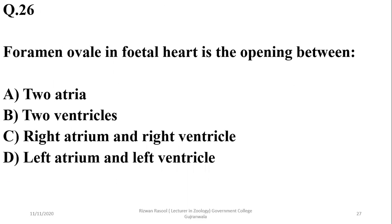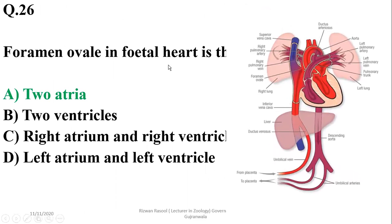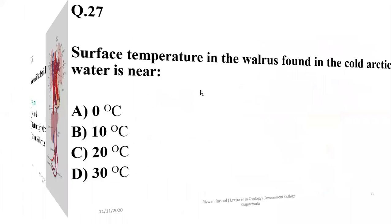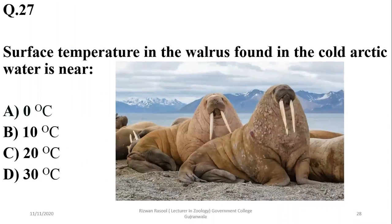Question 25: Foramen ovale in the fetal heart of a mammal is the opening between the two atria. During fetal circulation, most blood moves through the foramen ovale from the right atrium to the left atrium. The right option is A. Question 26: Surface temperature in the walrus, found in cold arctic water, is almost near zero degrees Celsius, but core body temperature is still maintained. The right option is A.